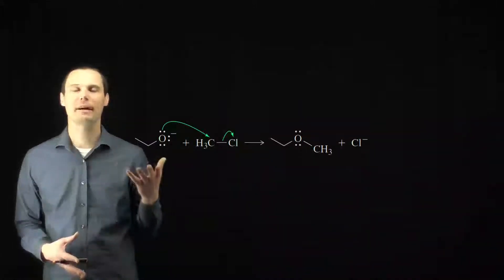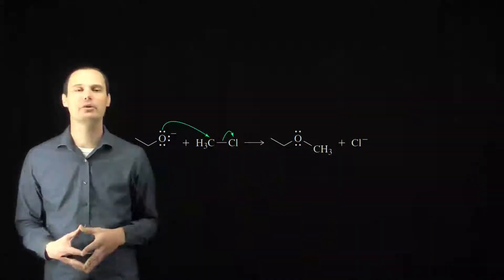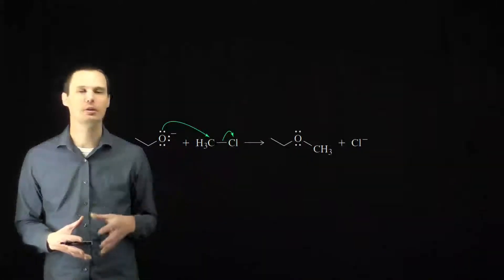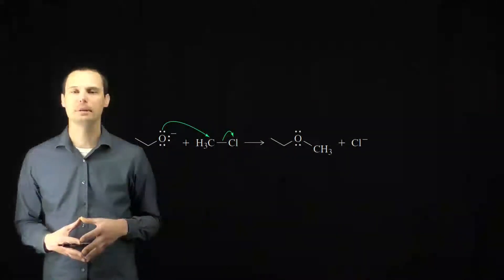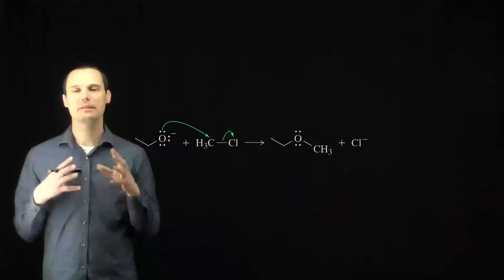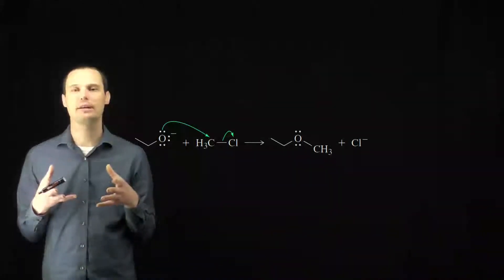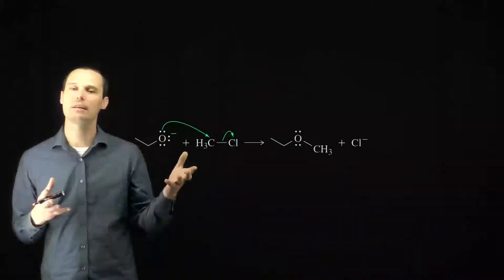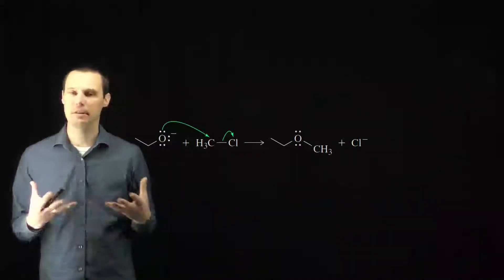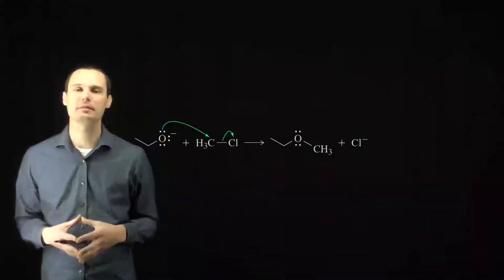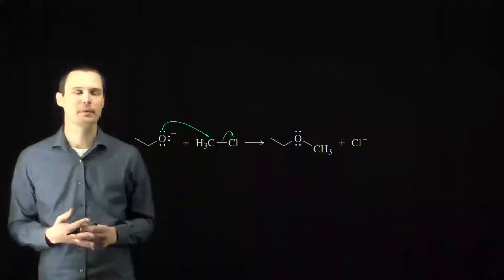This question asks us to identify the Lewis acid and the Lewis base in this particular reaction. The Lewis base is the thing with electrons, that is, attacking the thing without electrons, and the thing without electrons is the Lewis acid.